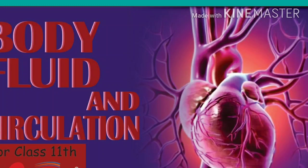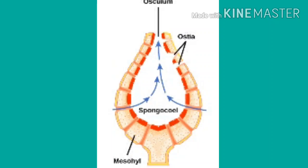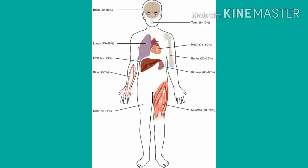Simple organisms like sponges and cnidarians circulate water present in their surroundings through their body cavities to facilitate the body cells to exchange these substances. On the other hand, in more complex organisms, special fluids are present within their bodies for the transportation of such materials. In most of the higher organisms including humans, blood is the most commonly used body fluid for this purpose. Another body fluid, lymph, also helps in the transport of certain substances.